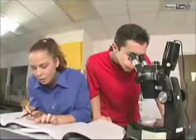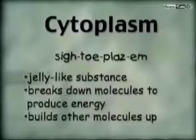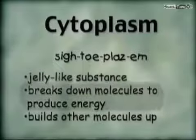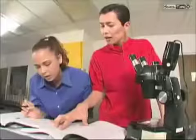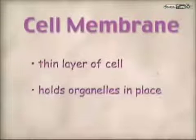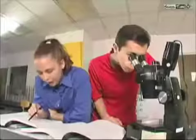Is that the stuff I'm stepping in? No, that sticky stuff is the cytoplasm. The cytoplasm is the jelly-like substance where molecules are broken down to produce energy and other molecules are built up. The cell membrane is a thin layer around the cell which holds the cytoplasm and all the organelles in place. Well, I'm obviously not an organelle. How did I pass through the membrane without ripping it? According to my book, it's because cell membranes are semi-permeable. A semi-permeable membrane is a membrane that only allows certain particles to pass through it.